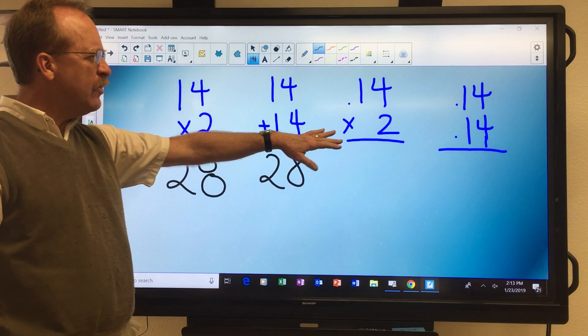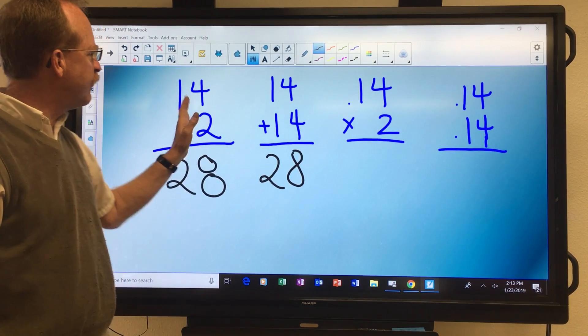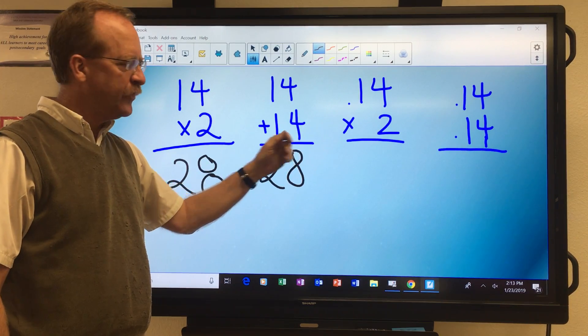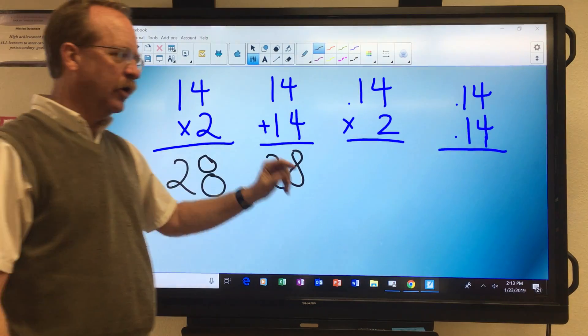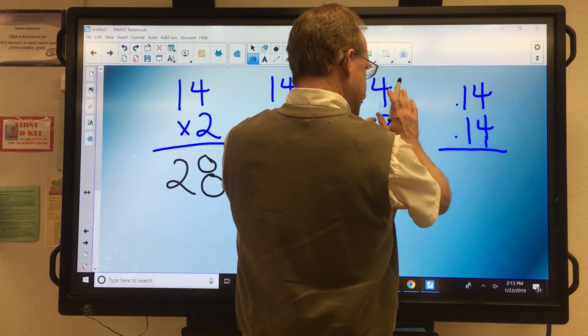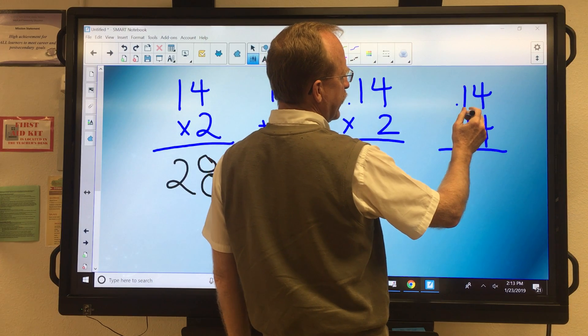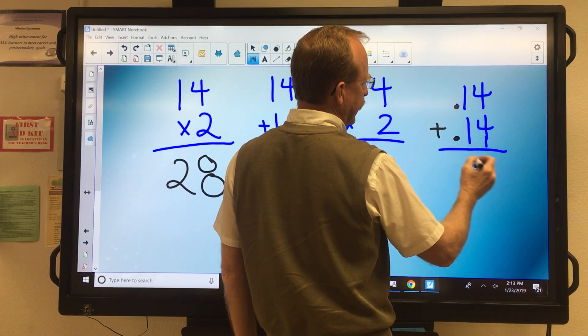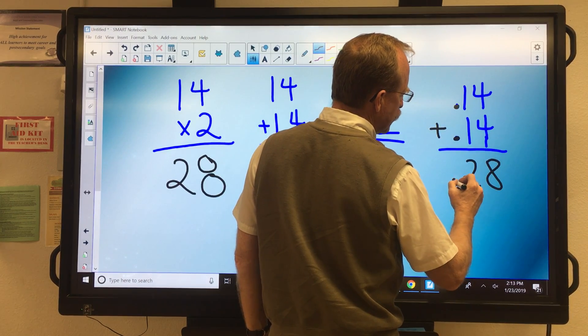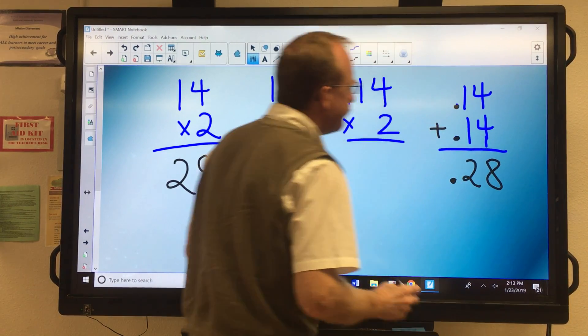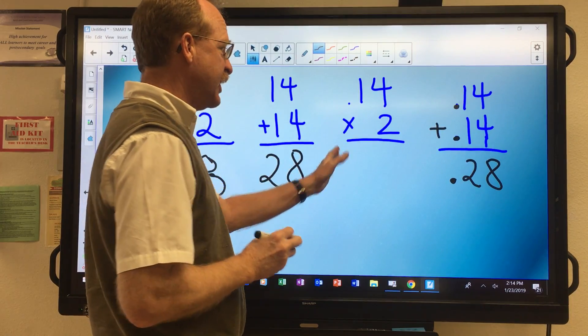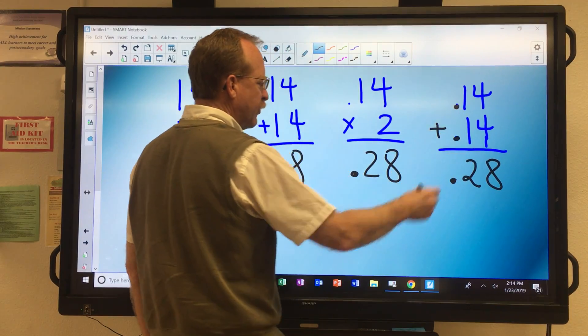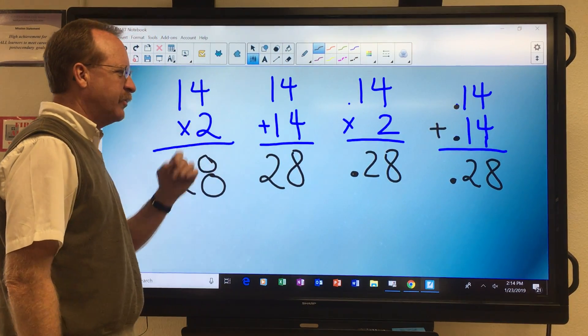Now how do you deal with a decimal though? What if instead of 14 times 2, it's .14 times 2? Well adding gives us a clue. Let's put this aside for just a second. If we think to ourselves, .14 plus .14 gives me .28, that has to be the same answer. 2 times .14 is the same thing as .14 times .14. And we notice something.